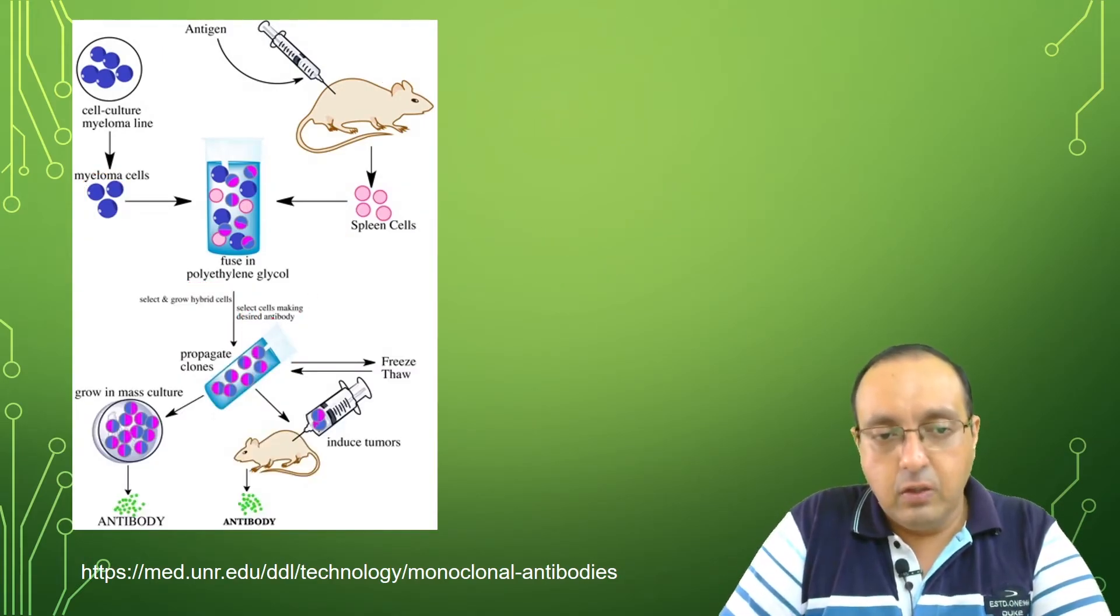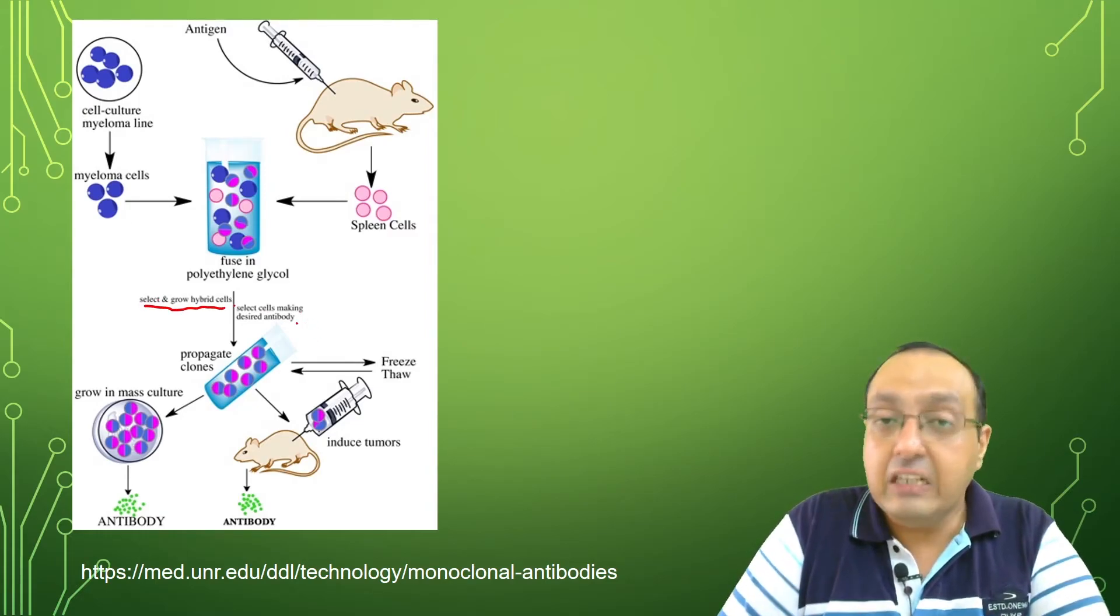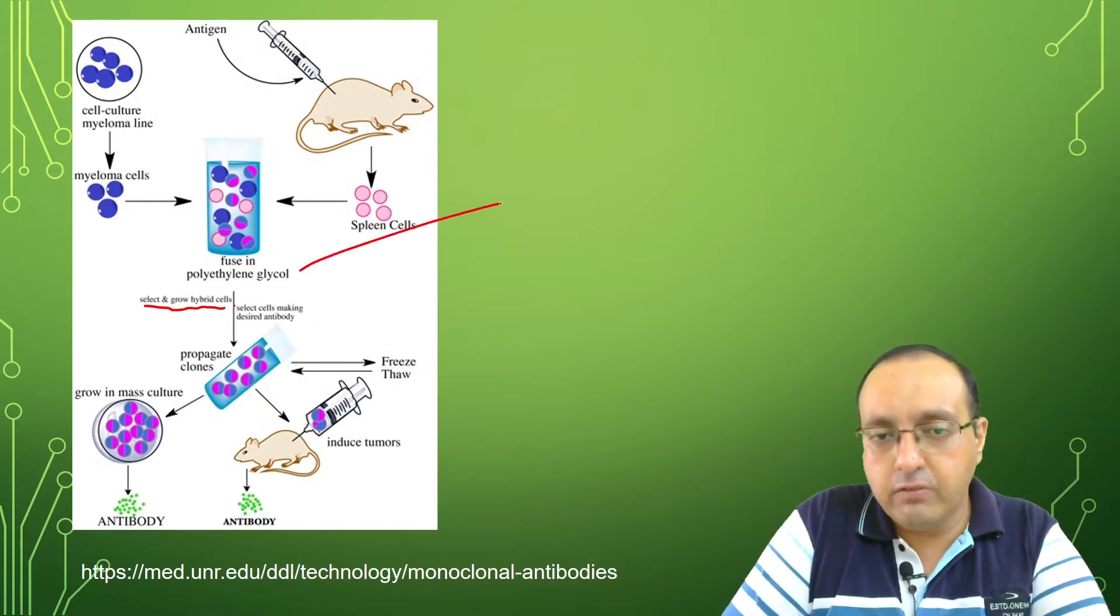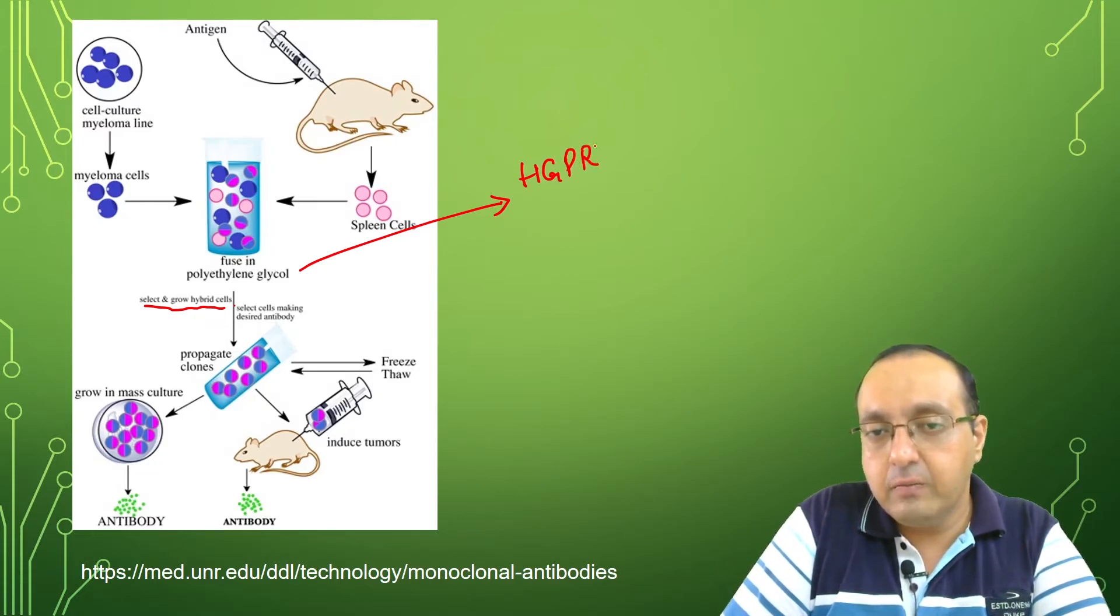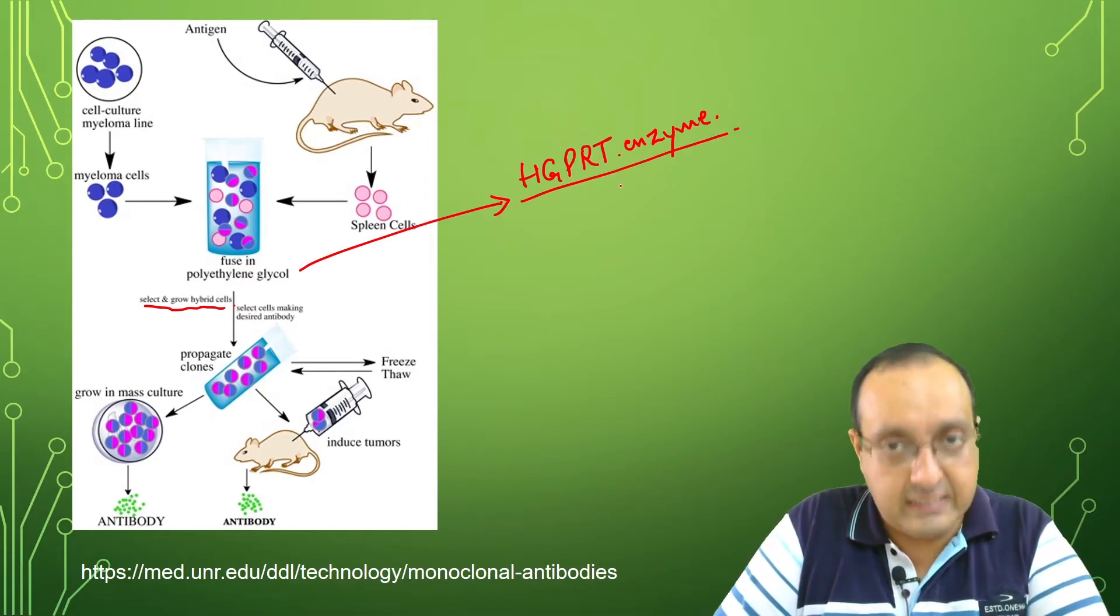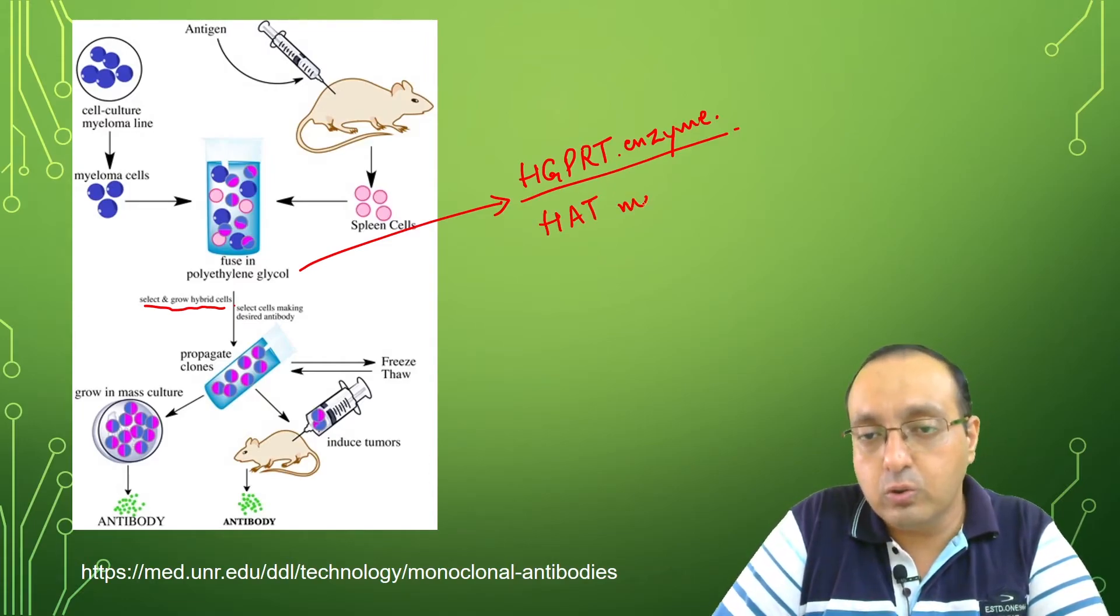In the next step, we select and grow the hybrid cells. We dilute these cells to select them first. One way to select them is that myeloma cells usually lack the HGPRT enzyme: hypoxanthine-guanine phosphoribosyl transferase. Basically, if we use HAT medium to grow these cells, which contains hypoxanthine, aminopterin, and thymidine, these cells will not be able to survive.